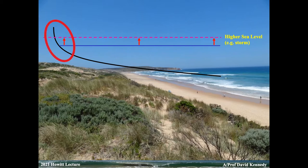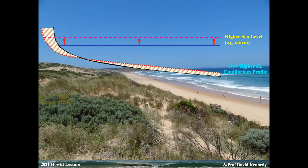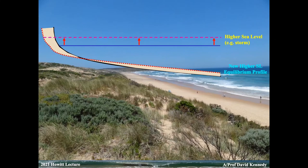The beach's response is to shift that sand — it absorbs that impact. So the beach responds by effectively flattening itself out. We get some erosion, and that sand is then transferred offshore.